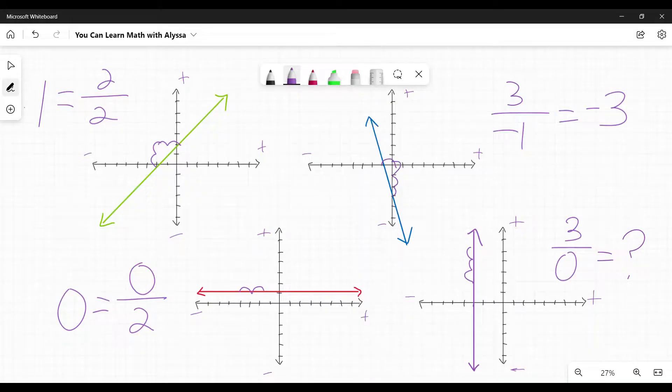If you find that difficult to remember, you can always go back to this and just take two points, divide them and find the slope. And you will know if it is positive, negative, zero or undefined.